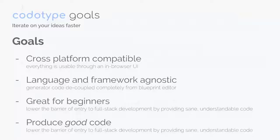There aren't good cross-platform options; there aren't good code generators that build things with the tools I want to use. A lot of this is scratching my own itch — I want to accelerate my workflow on new projects. The goals of Codotype are: cross-platform compatible, language and framework agnostic, friendly for beginners, and producing good clean functioning code that looks like maybe a person actually wrote it, instead of machine-produced stuff.